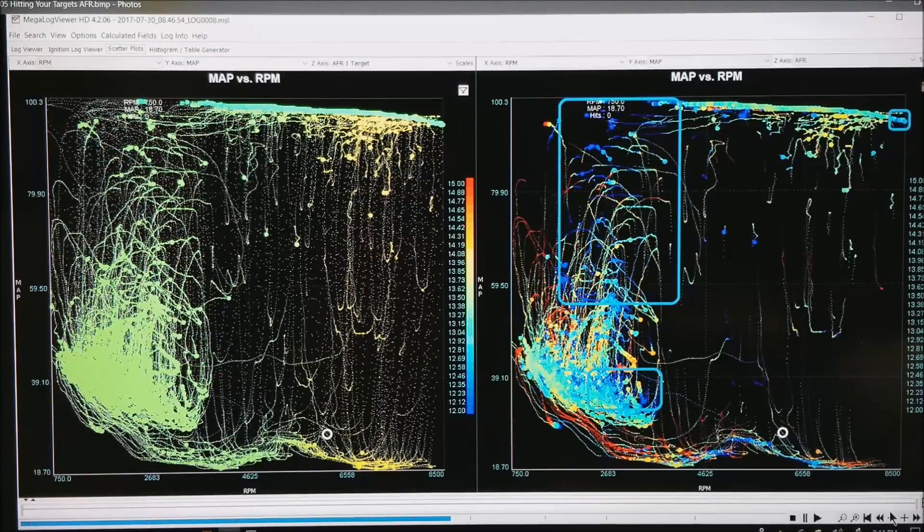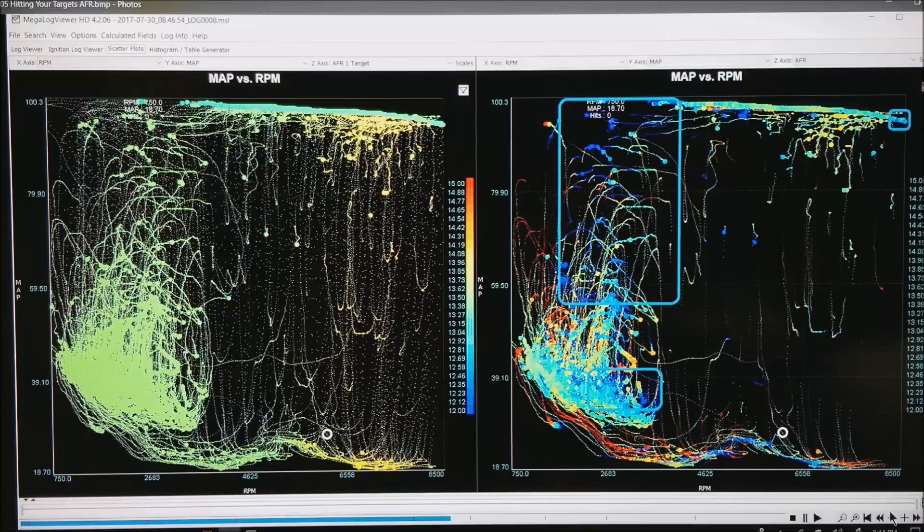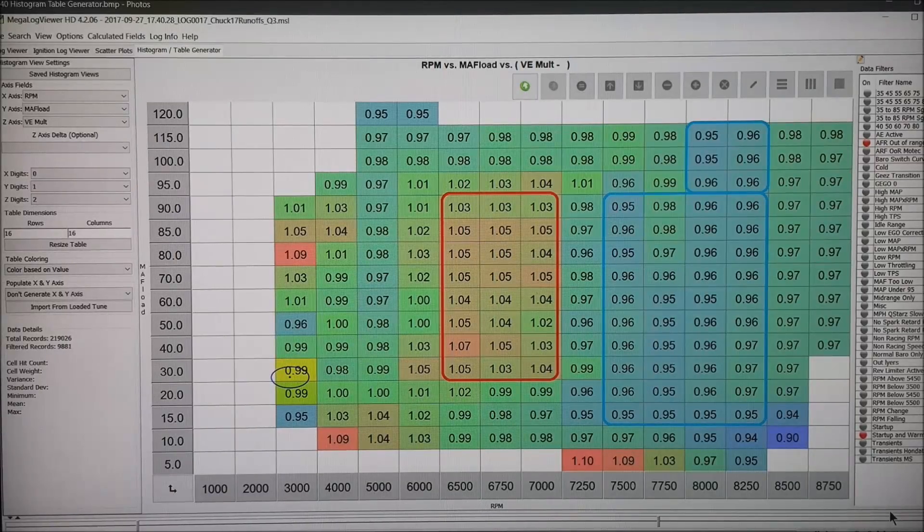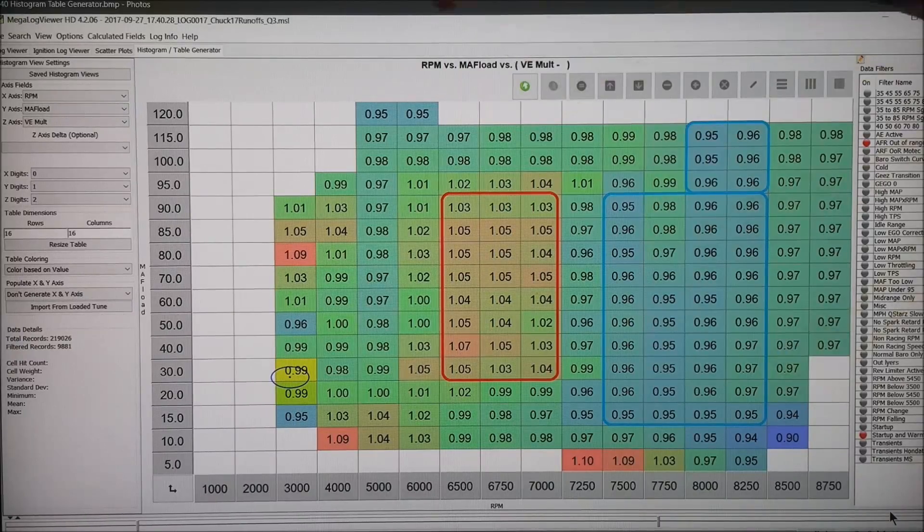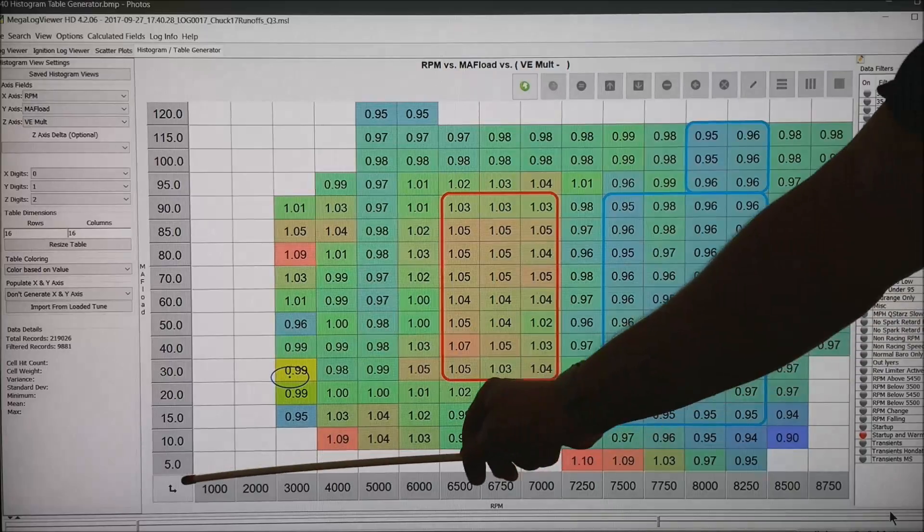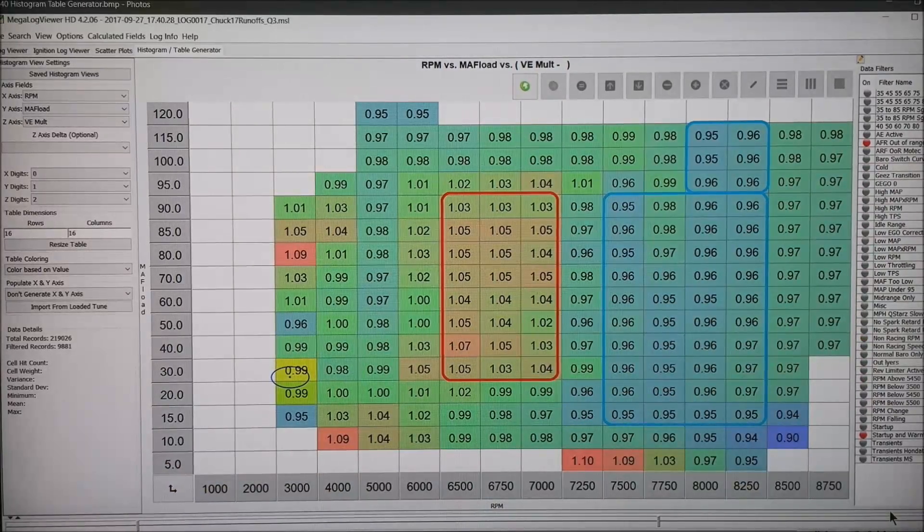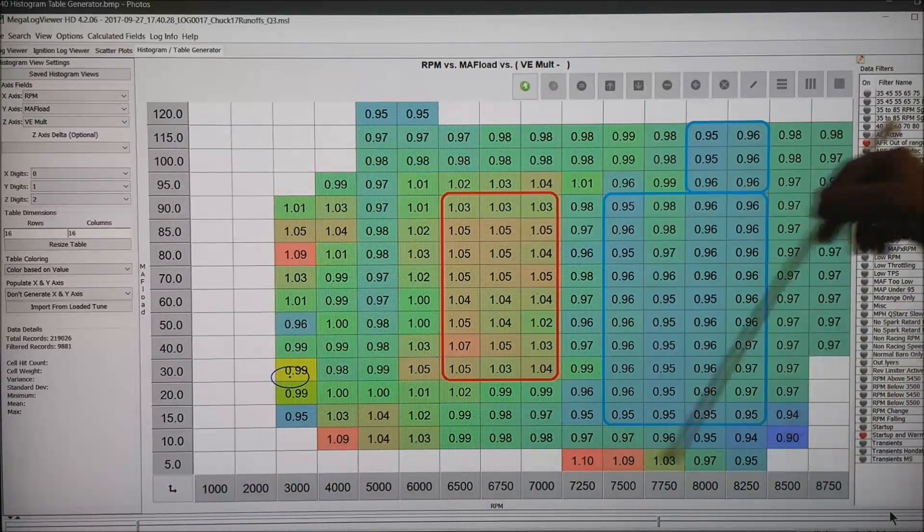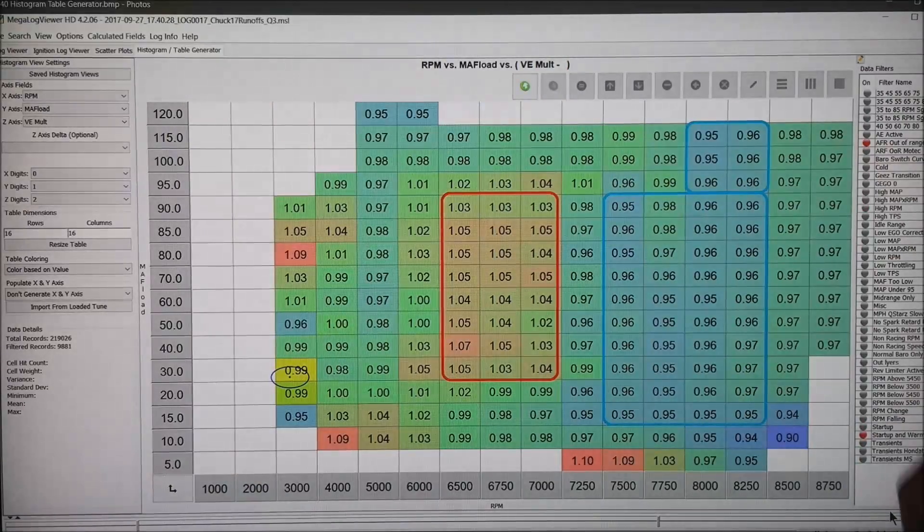Now what I have done is just highlighted those areas in a box to make it a little easier to see. Here is where MegalogViewer HD really shines. What it is is I have gone to the histogram table generator. And by using this little arrow up and arrow right button, I have made the boxes the same as our tuning software.